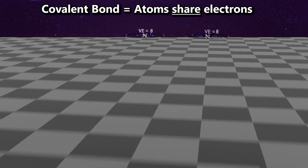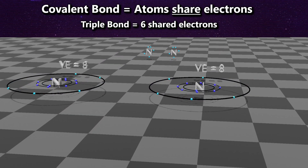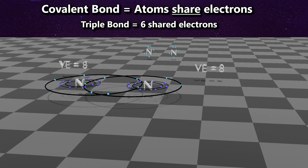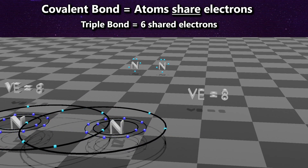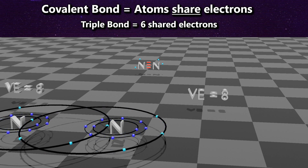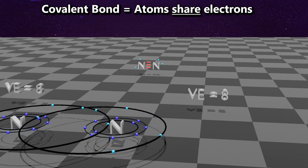The triple covalent bond occurs when we have six shared electrons. In this example, we have two nitrogen atoms, both with five valence electrons. They come together to share six electrons. Looking at the Lewis dot structure, six electrons are shared in the middle, and counting the electrons around each atom gives us 8. The triple bond is symbolized by three bars in the middle.